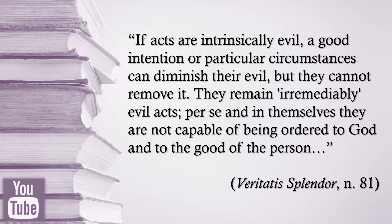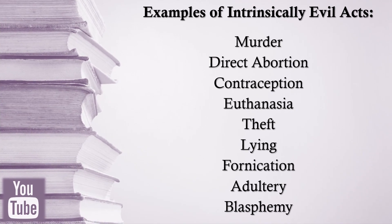In a Catholic document entitled Veritatis Splendor, we find the following explanation about intrinsically evil acts: 'If acts are intrinsically evil, a good intention or particular circumstances can diminish their evil, but they cannot remove it. They remain irremediably evil acts. Per se and in themselves, they are not capable of being ordered to God and to the good of the person.' Examples of intrinsically evil acts include: murder, direct abortion, contraception, euthanasia, theft, lying, fornication, adultery, and blasphemy.